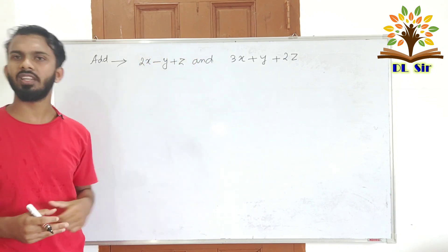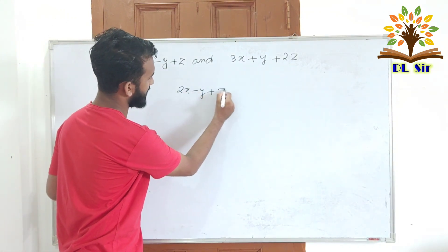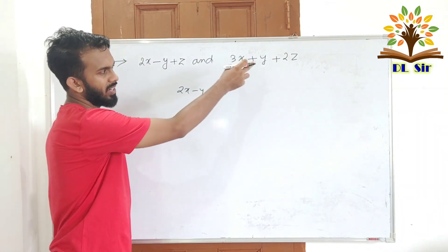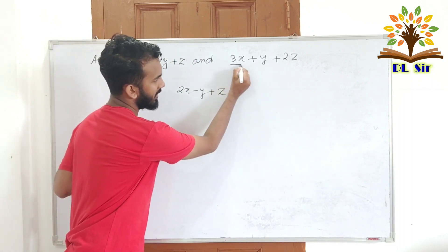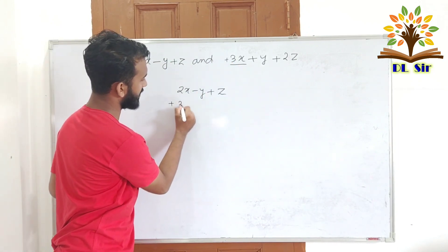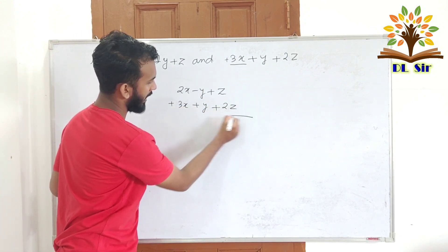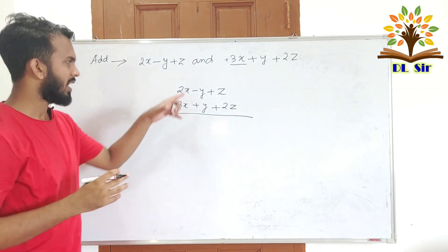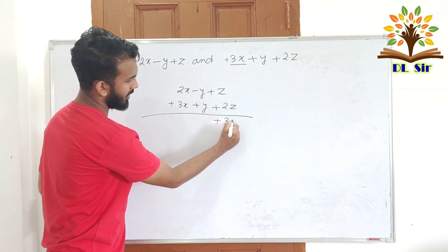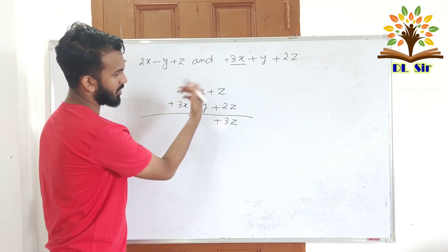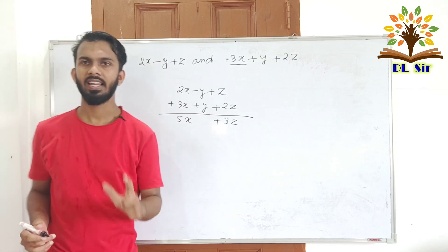When we have 3 variables, it works the same way. Let's write: 2x minus y plus z, and the next equation is 3x plus y plus 2z. Combining same variables: 2x plus 3x gives 5x, minus y plus y cancels out, and z plus 2z gives 3z. So the answer is 5x plus 3z.